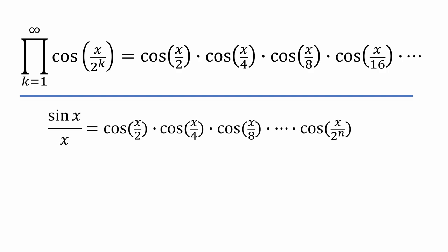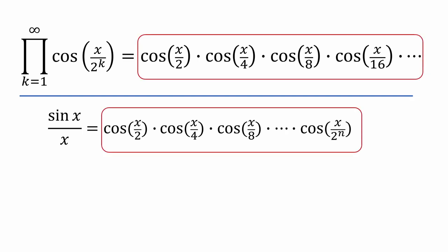Since the infinite cosine products in both expressions are equal, we can conclude that sine x over x is indeed equal to the infinite cosine product. This nifty little identity, by the way, was discovered by none other than the great Leonard Euler.